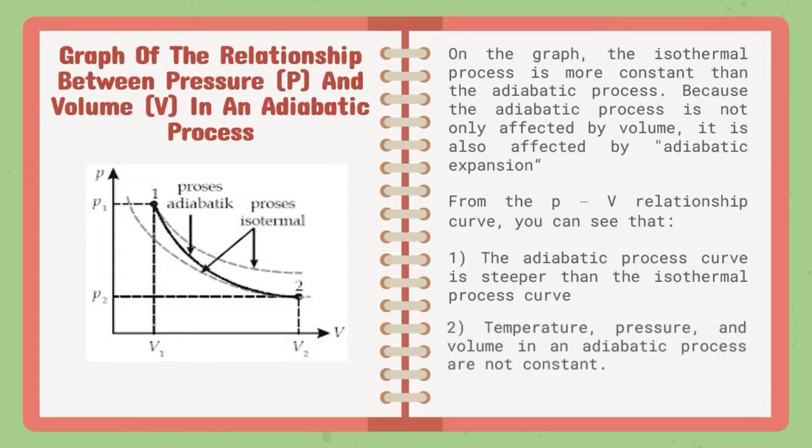A steep curved line will form, so this is the curve of the adiabatic process. Based on the concept of work, we can use the integral to calculate the area between the curve and the V axis. From the P and V relationship curve, you can see that: first, the adiabatic process curve is steeper than the isothermal process curve; second, temperature, pressure, and volume in an adiabatic process are not constant.